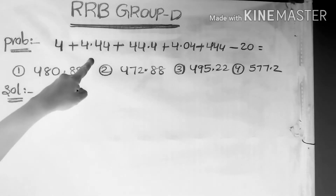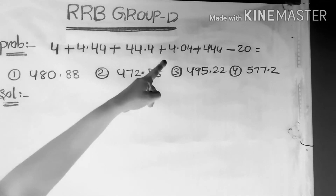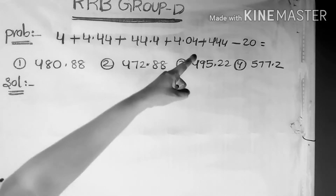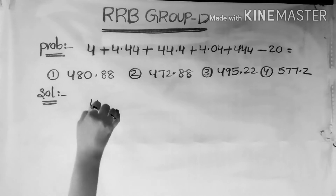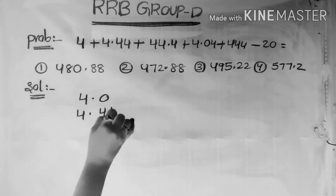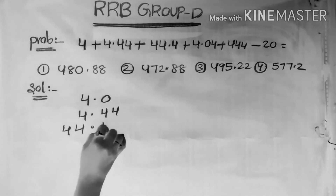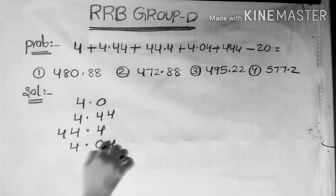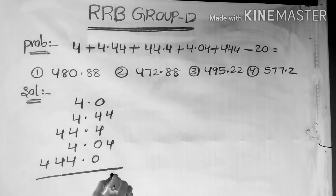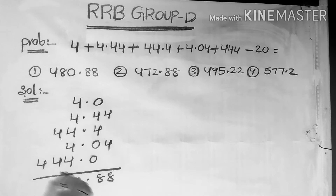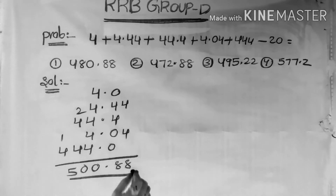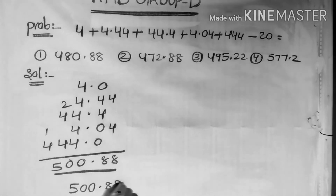4 plus 4.44 plus 44.4 plus 4.04 plus 4.44 minus 20. We write each number: 4.0, 4.44, 44.4, 4.04, and 4.44. Adding all these numbers, the sum is equals to 500.88, then minus 20.